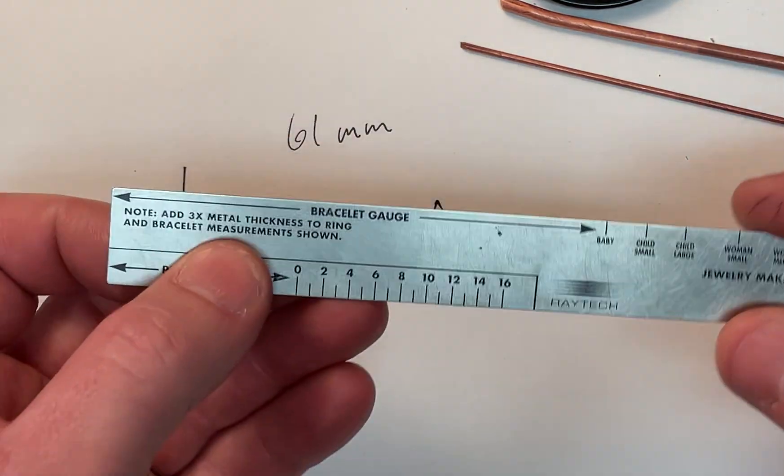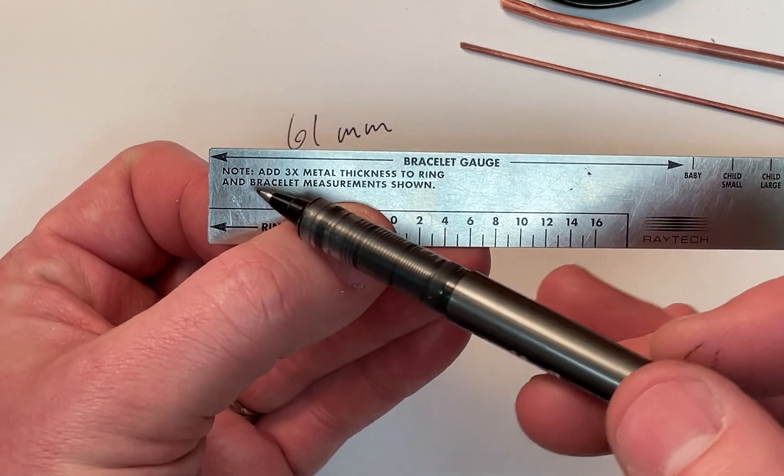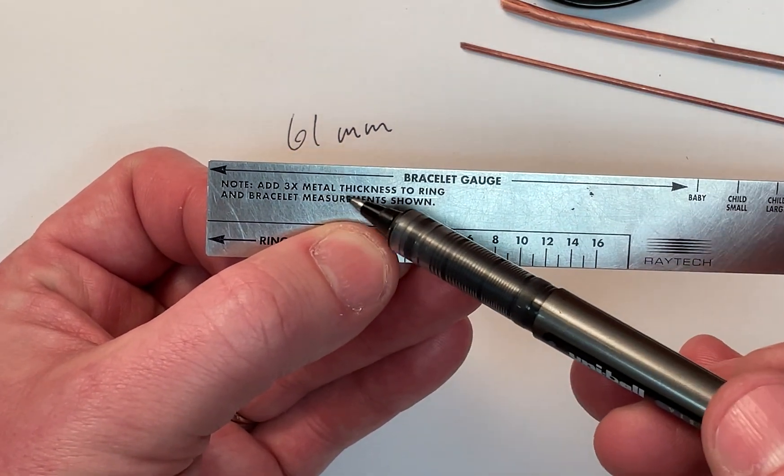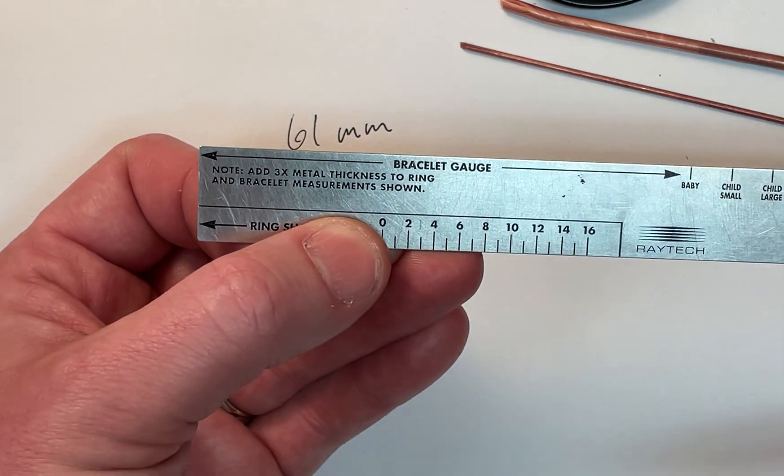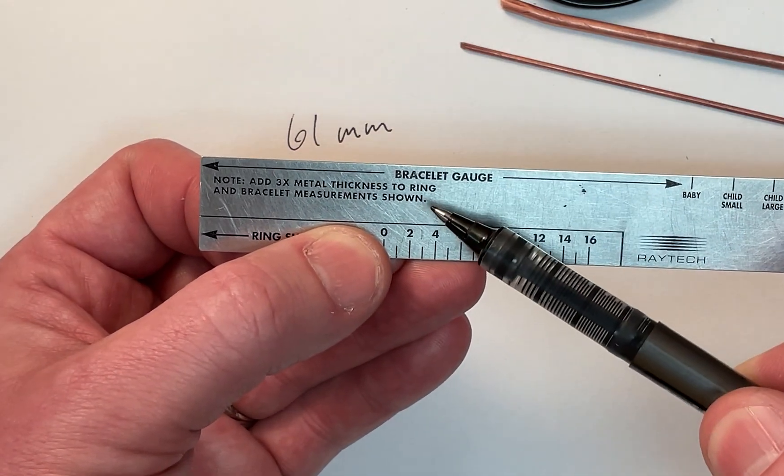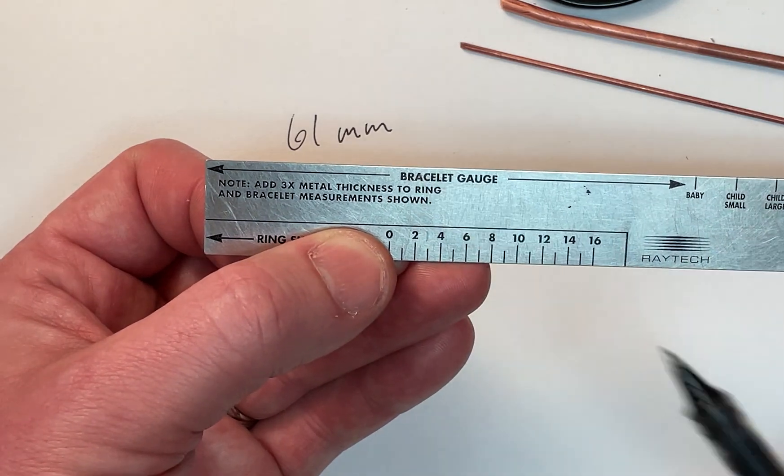But here's where we run into a little bit of a hiccup. As you may have noticed right here, there's a note, and that note says add 3x or three times the metal thickness to a ring. So add 3x metal thickness to a ring.